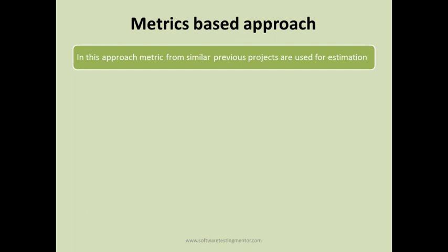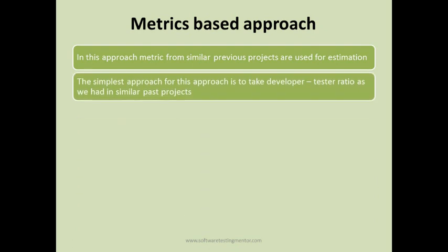In the matrix-based approach, metrics from similar previous projects are used for estimation. For example, if phase one of a project has ended, you use those metrics to estimate phase two. The simplest approach is to take the developer-to-tester ratio — for instance, if the previous phase had a ratio of 3:2, you can apply the same ratio in the current phase. However, this is the simplest approach and doesn't give you a proper estimation.